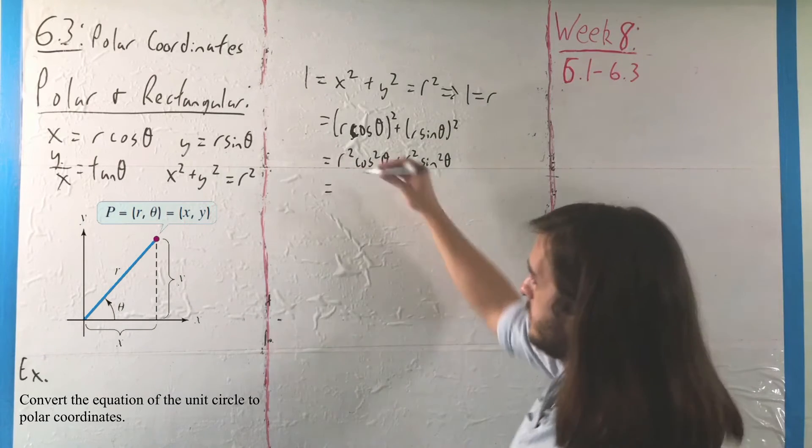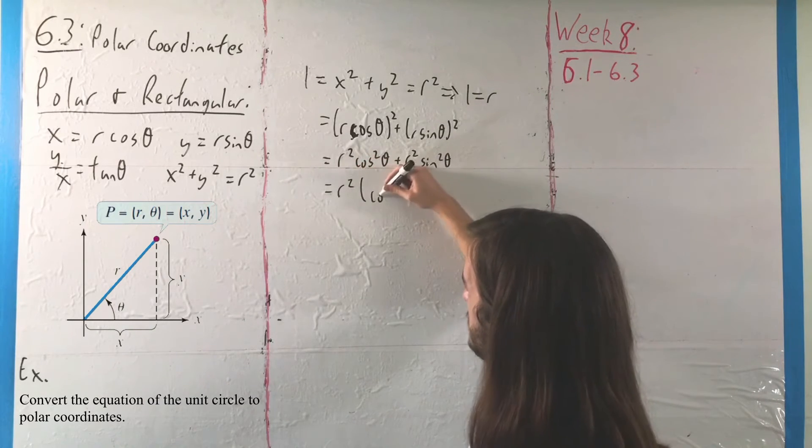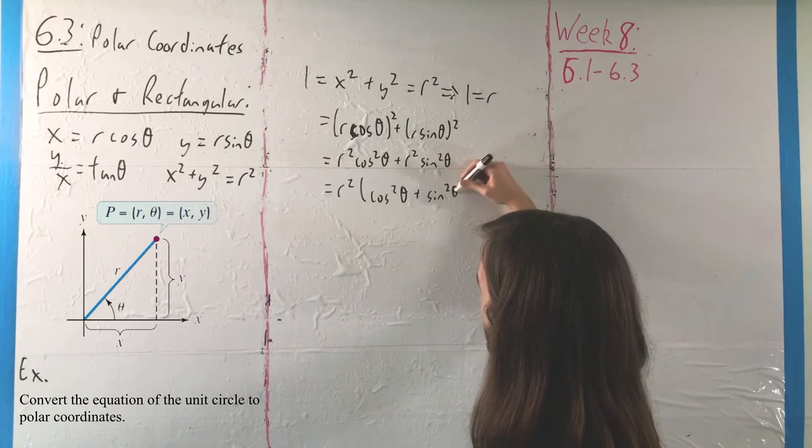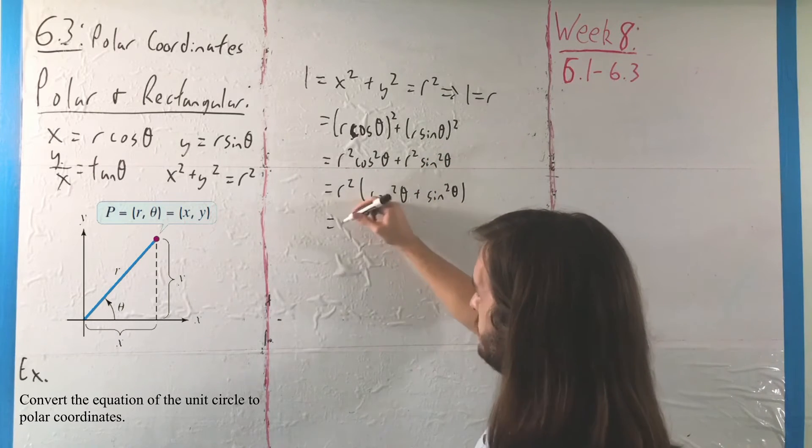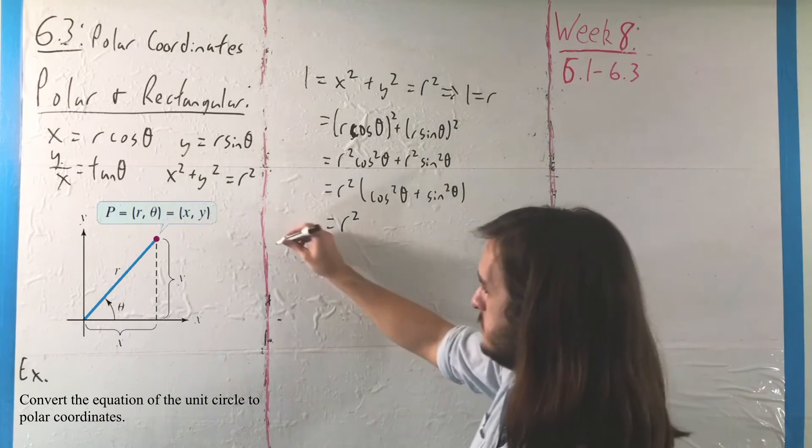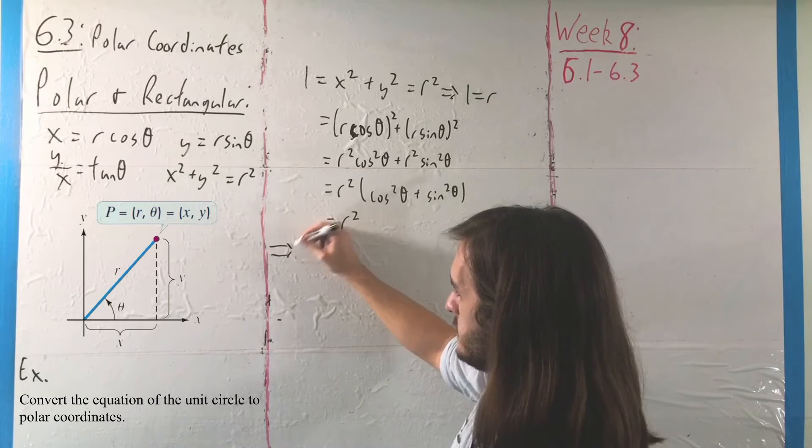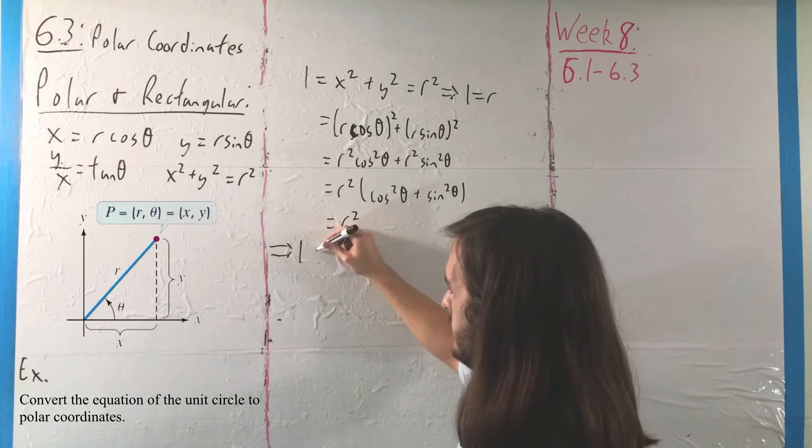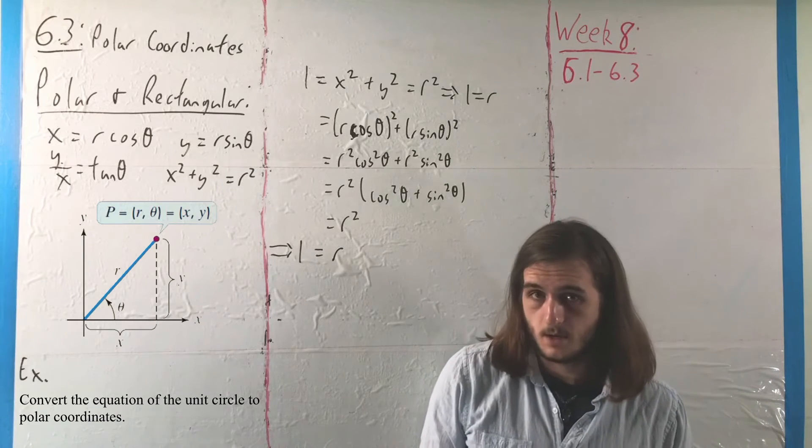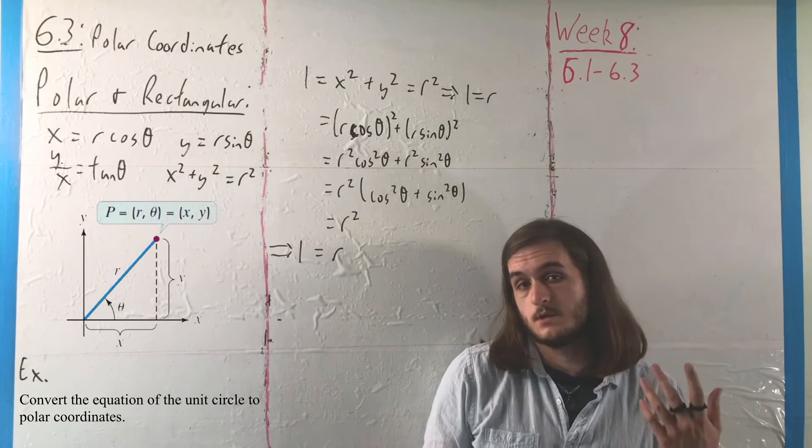We can factor out an R squared. We get cosine squared of theta plus sine squared of theta, or R squared times 1, which is R squared. Which means that for different reasons, the sort of reasons we'll use more often here, we get the polar equation 1 equals R.